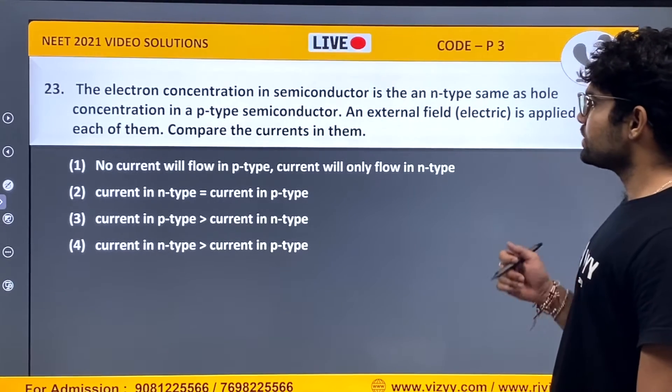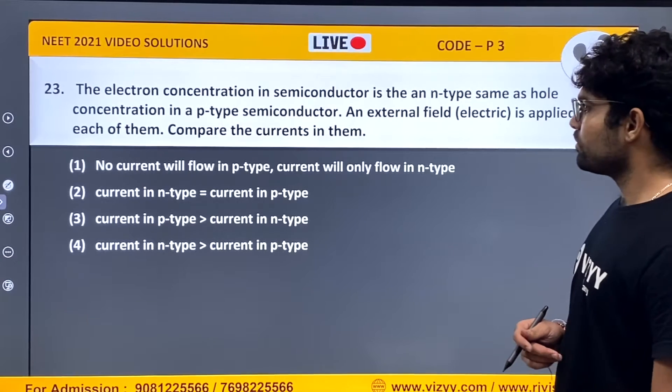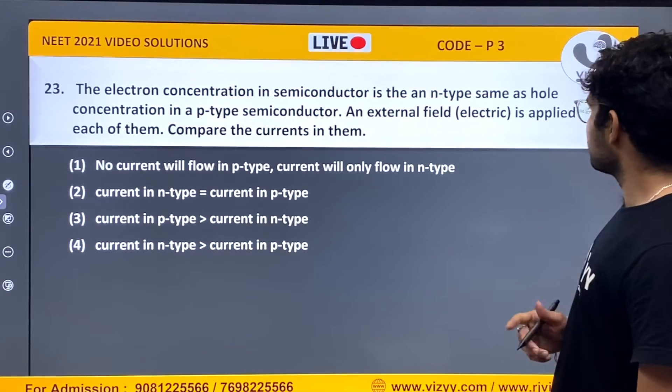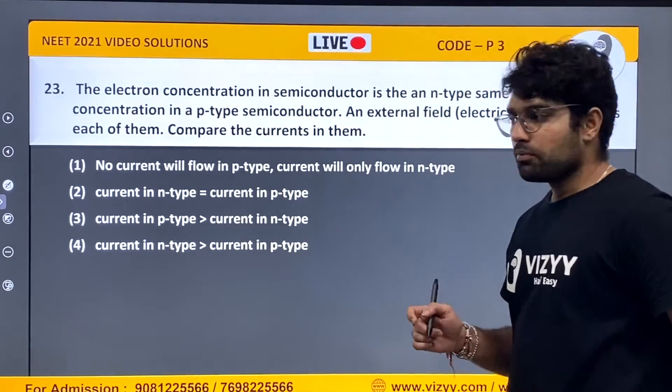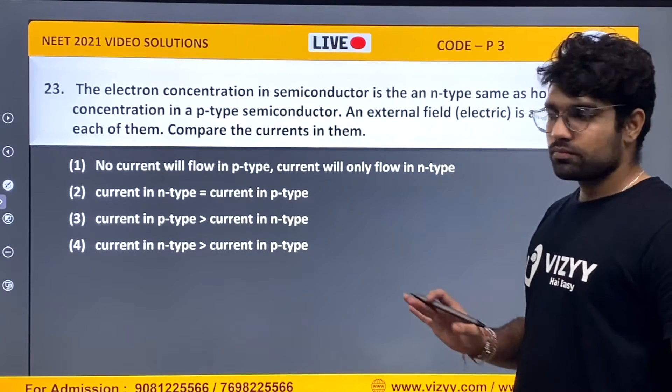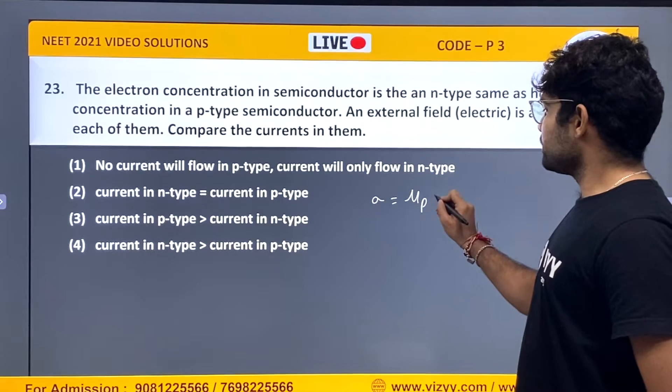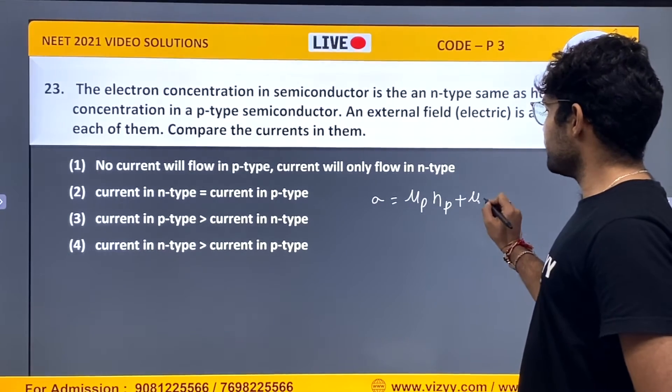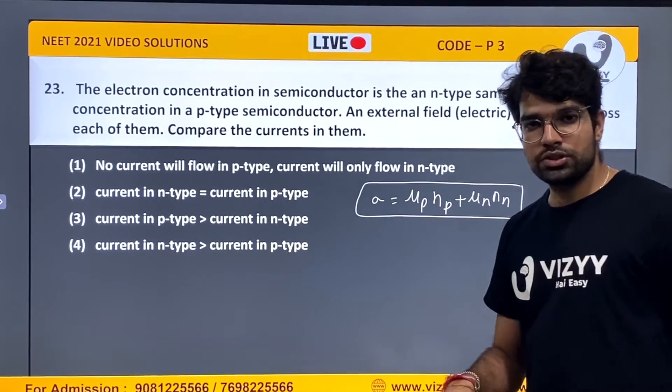The electron concentration in semiconductor is the N-type same as hole concentration in p-type semiconductor. And external field is applied across each of them, compare the currents in them. You know the formula sigma equals mu_P into N_P plus mu_N into N_N.